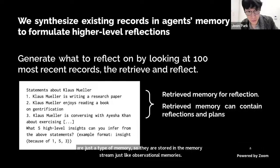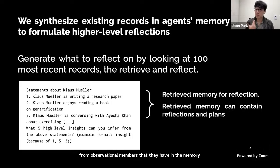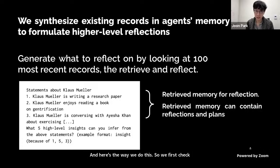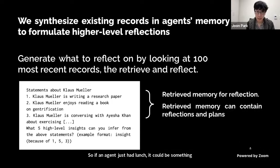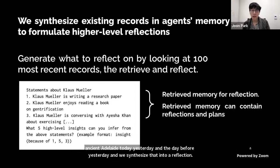The reason we do this is that agents need to make higher-level inferences — extracting opinions or thoughts from observational memories. This reflection module achieves that. We first generate questions on what to reflect on by looking at the 100 most recent records in the agent's memory stream. For example, after lunch, the question might be 'What does the agent like to eat?' We then retrieve relevant records — such as the agent eating an omelette today, yesterday, and the day before — and synthesize that into a reflection: 'Maybe the agent likes to eat omelettes.'